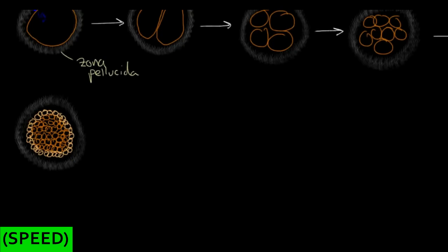So here we have two separate populations of cells. The ones on the outside we'll call trophoblasts. And this mass of cells on the inside we'll call embryoblasts.